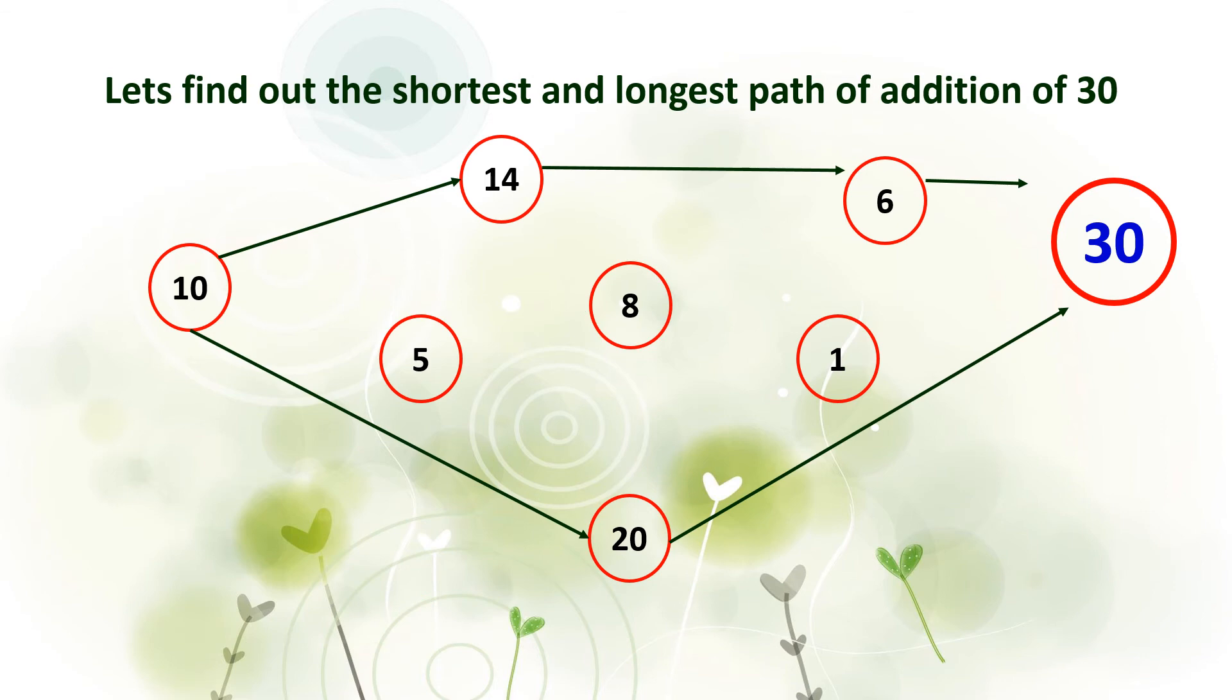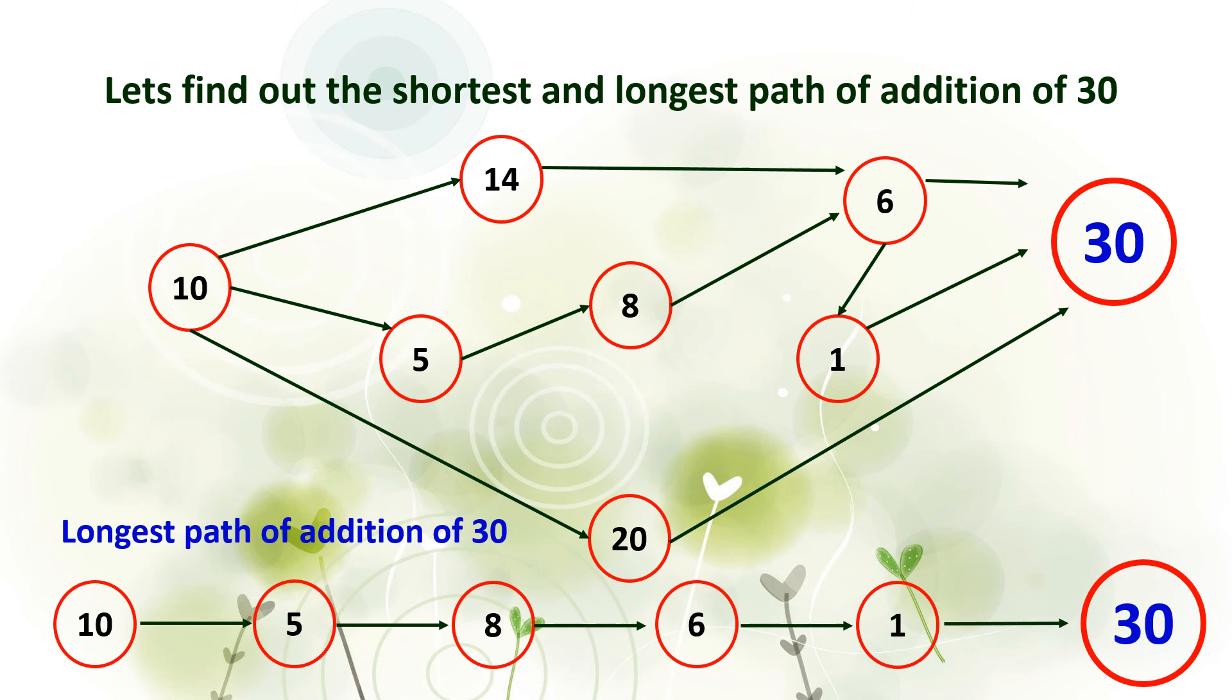The longest path of addition of 30 is 10 plus 5 plus 8 plus 6 plus 1 equals 30.